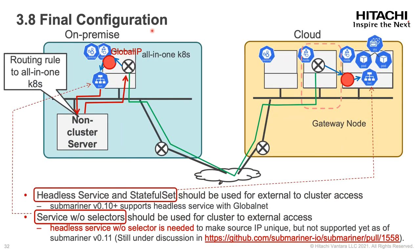The final configuration for external network connectivity with Submariner is as follows. For external-to-cluster connectivity, headless service and StatefulSet should be used. Submariner version 0.10 and later supports headless service with GlobalNet. For cluster-to-external access, service without selector should be used. Actually, headless service without selector is needed to make source IP unique, but it is not supported yet as of version 0.11 and is still under discussion. So currently, what we can do is just use service without selector, meaning one direction of access has source IP as global IP but not unique.